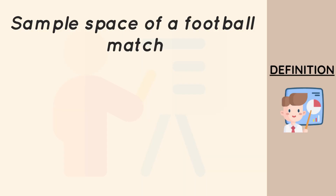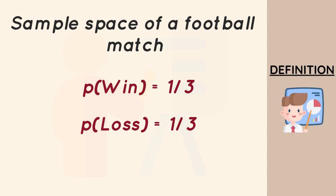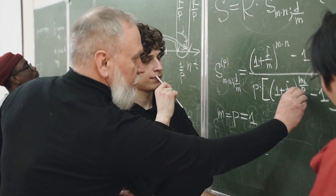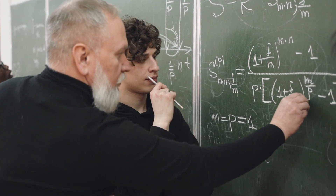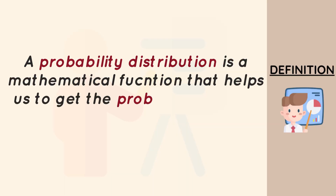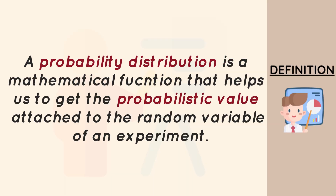Each of those random variables has a probabilistic value attached to them. The probability that a team wins the match equals 1/3, the probability that the team loses equals 1/3, and the probability that a team draws equals 1/3. When we have a mathematical function that helps us get the probabilistic value attached to each random variable as a result of an experiment, we call that a probabilistic distribution.